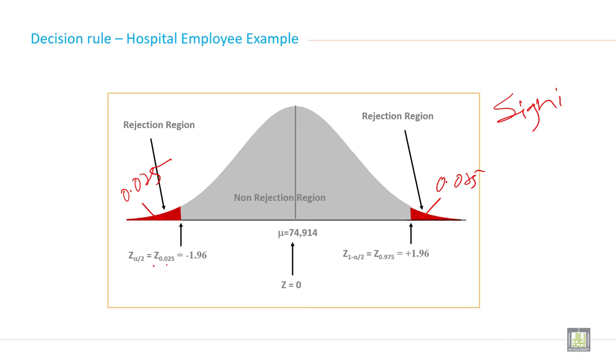And at 0.025 when you see the z table, left side it is minus 1.96 and right side it is plus 1.96.